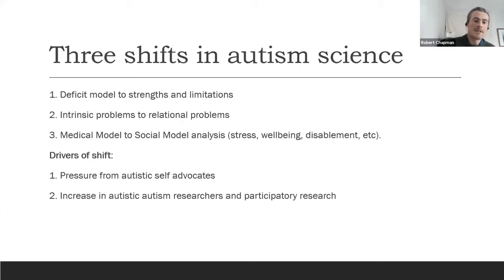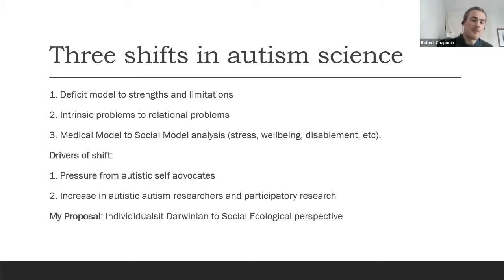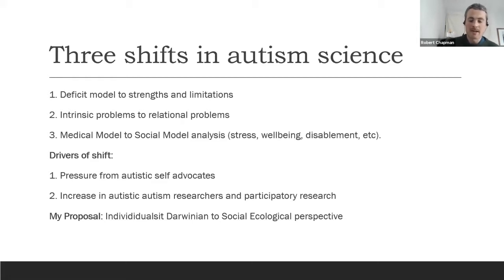We need to keep doing these things — much more than we do now. But we can also supplement this by thinking of the general shift as a conceptual shift in how we think about the mind. My proposal is that we are seeing a shift from a very individualistic Darwinian understanding of what it means to be functional or dysfunctional, towards an ecological, or what I might call social-ecological, perspective.